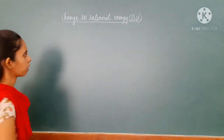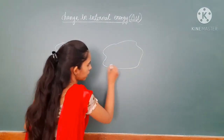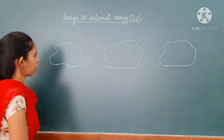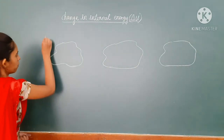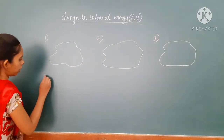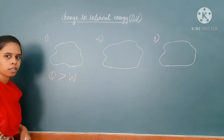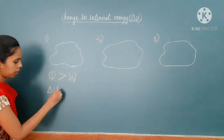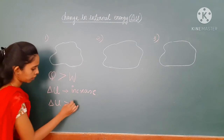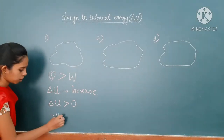We have to draw the system. We will consider three cases. In the first case, if the amount of heat is greater than the work done, then delta U will increase — that is, delta U is greater than zero. At this point, delta U is positive.